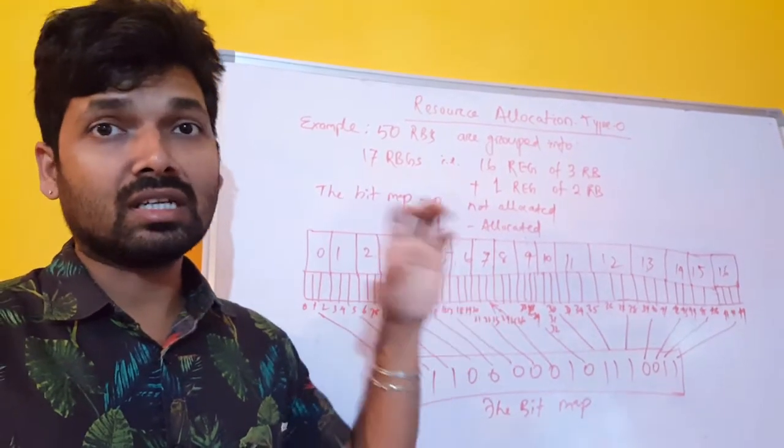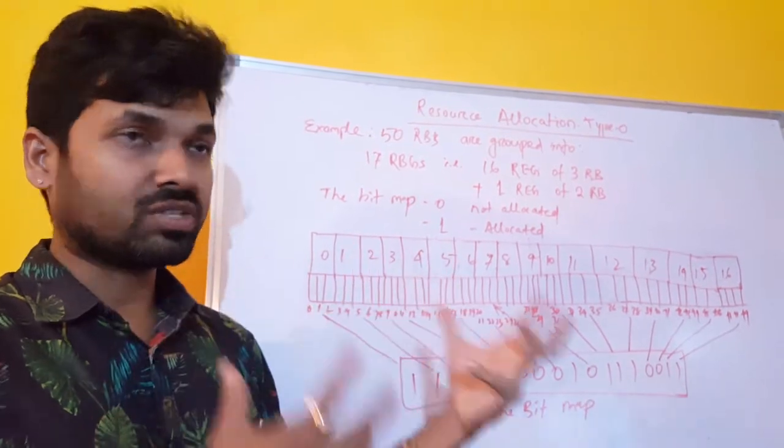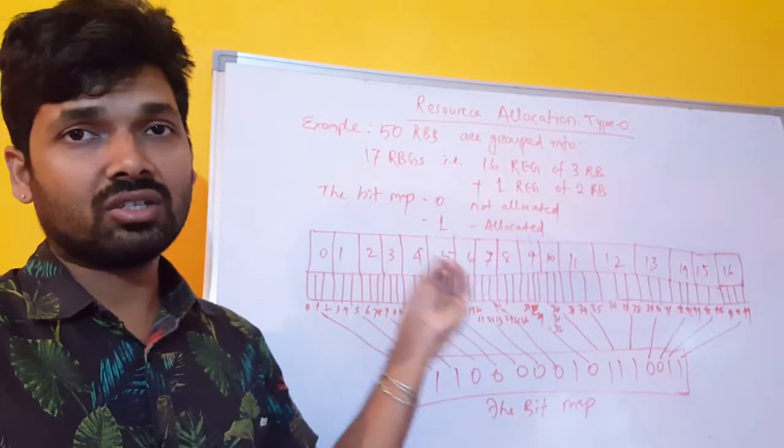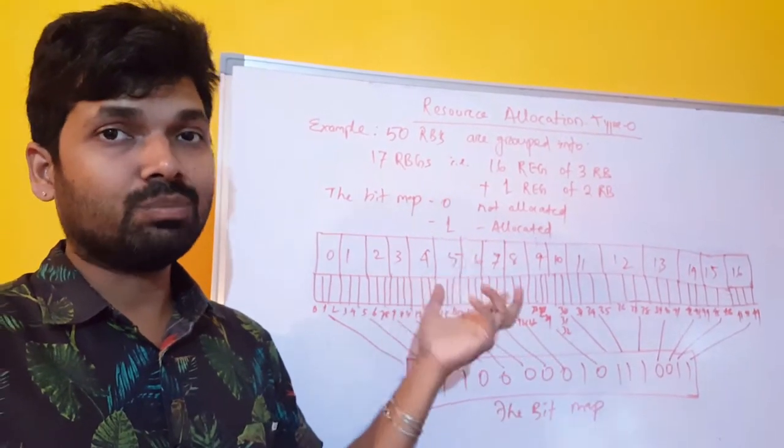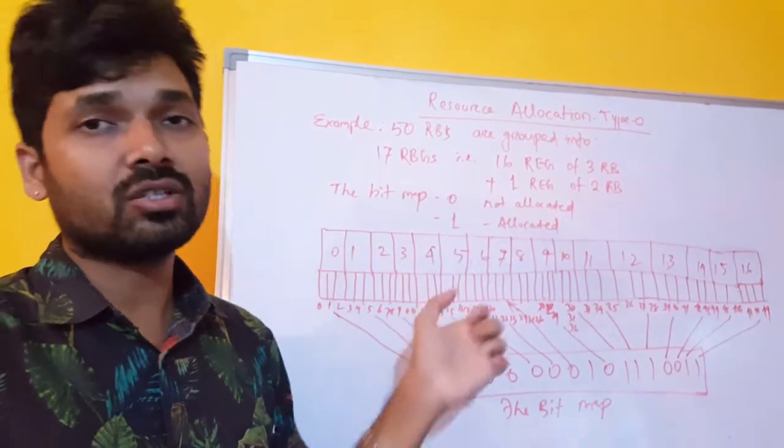As we discussed in the last topic, we have taken one example to express how resource allocation is done in PDSCH. So we will see one example. Today I have taken 50 resource blocks.